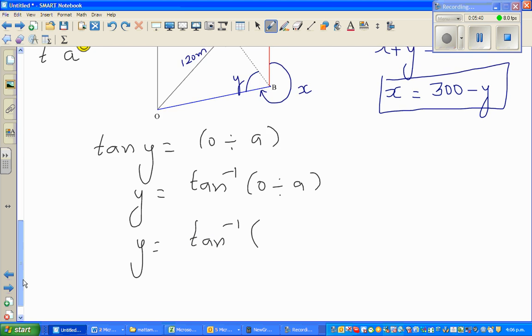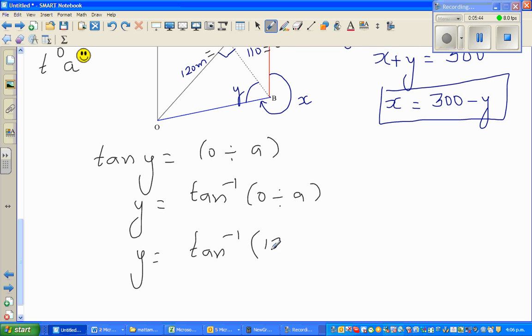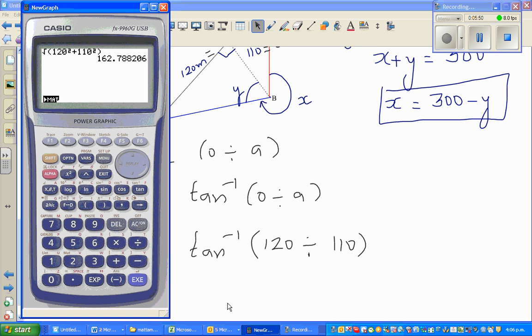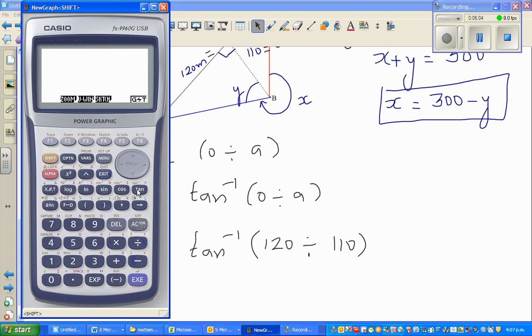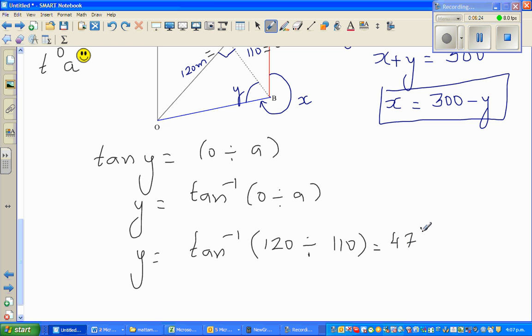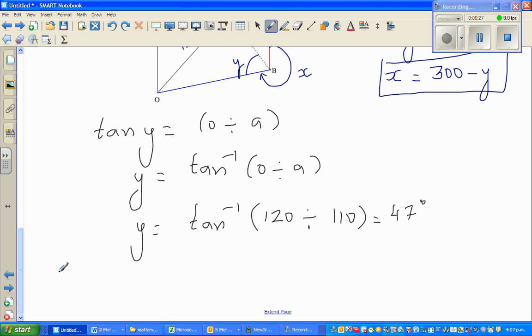So y is tan inverse of, where's my O, O is 120 divided by A which is 110. Let me get the calculator out. Always check your setting where the calculator is set on degrees. Yeah it's good, I checked, it's in radians, I have to change that into degrees. Then go exit and then go shift tan, bracket 120 divided by 110, close the bracket. That is 47 degrees.